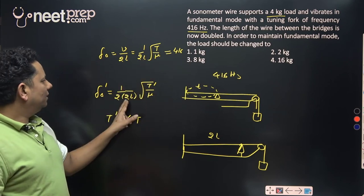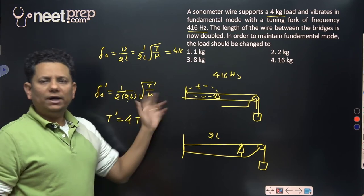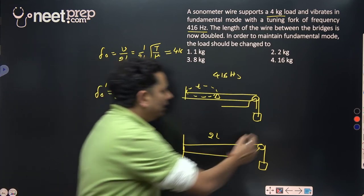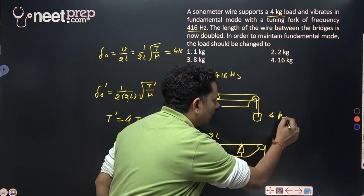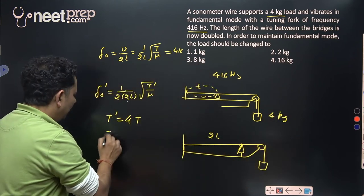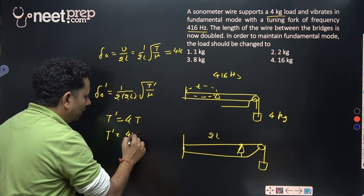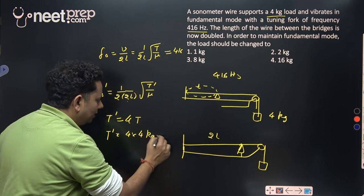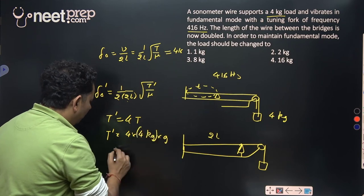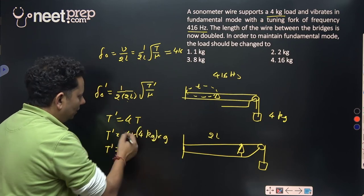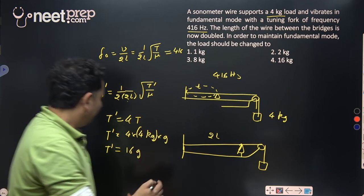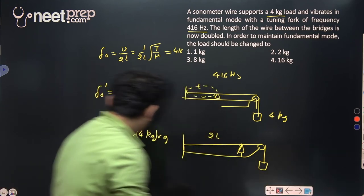For the simple reason that you have 2 times square root of 4, so T dash should be equal to 4T. If you have 4 kilograms initially, then T dash will be equal to 4 times T, which is 4 kg times g, and this will be equal to 16 kg times g.